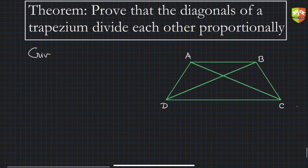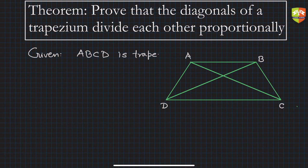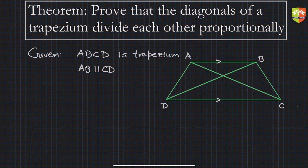Let me write what is given. ABCD is a trapezium. A trapezium is a quadrilateral having one pair of sides as parallel. So let's say AB is parallel to CD in this case.